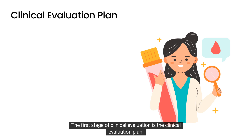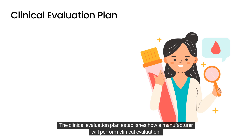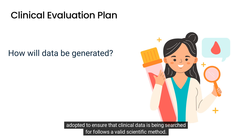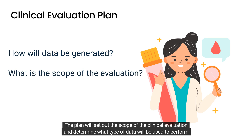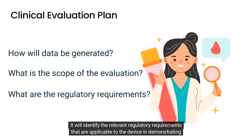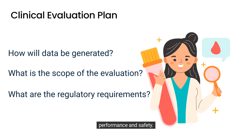The first stage of clinical evaluation is the clinical evaluation plan. The clinical evaluation plan establishes how a manufacturer will perform clinical evaluation. This includes how any scientific literature searches will take place and the methodology and research methods adopted to ensure that clinical data is searched for following a valid scientific method. The plan will set out the scope of the clinical evaluation, determine what type of data will be used, and identify the relevant regulatory requirements applicable to the device in demonstrating performance and safety.